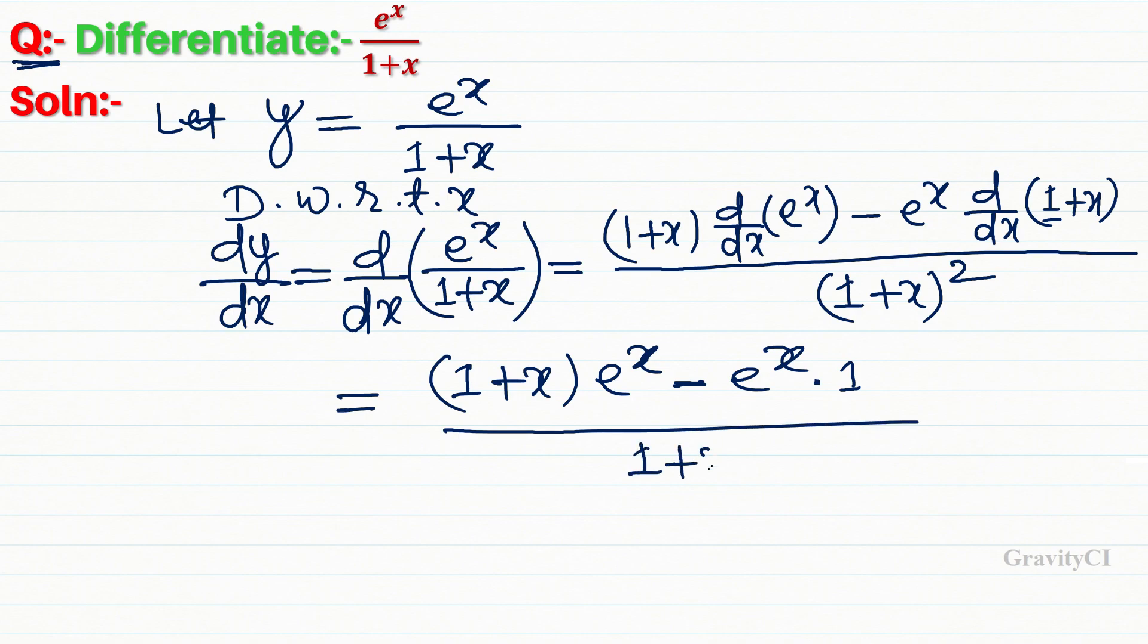All upon 1 plus x whole square. Now taking e to the power x common in the numerator, this becomes 1 plus x minus 1 upon 1 plus x whole square. The 1s cancel out.